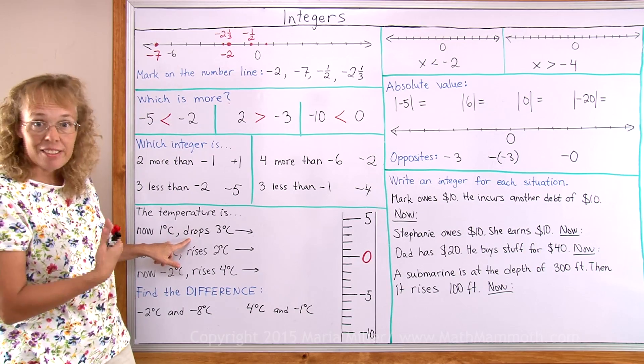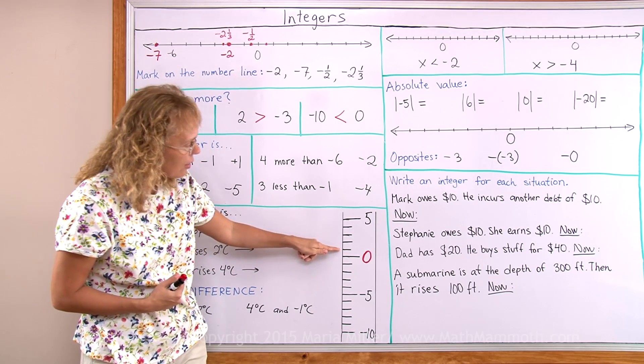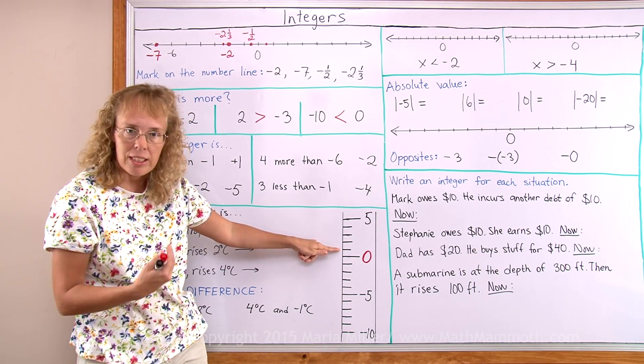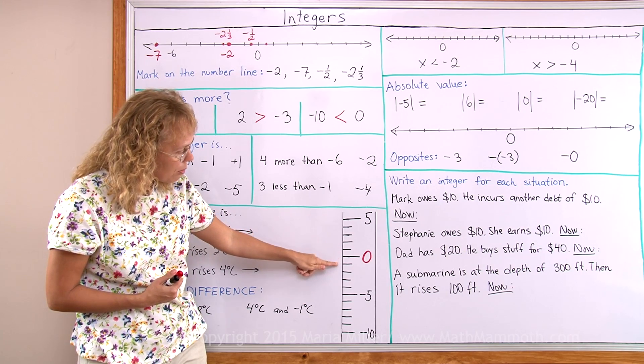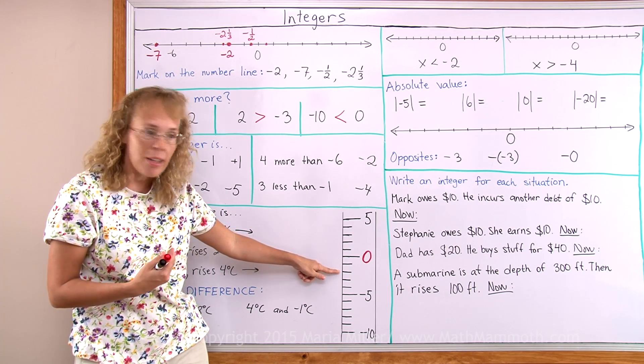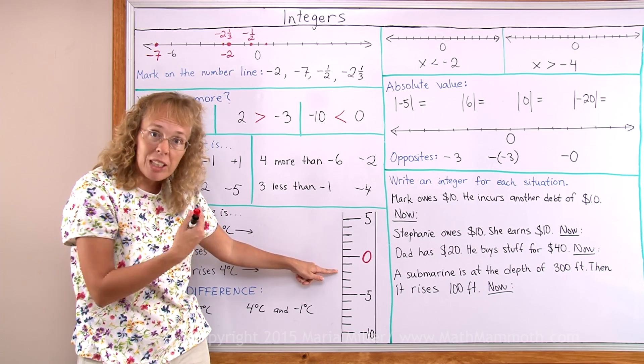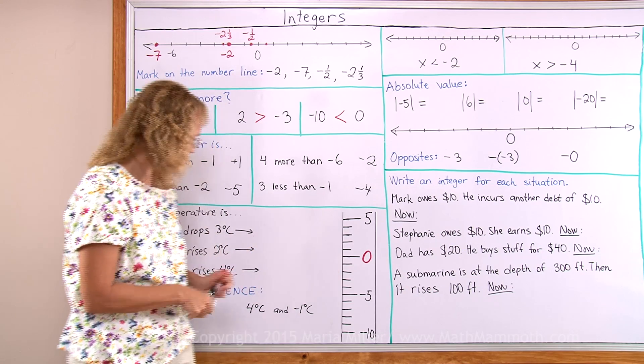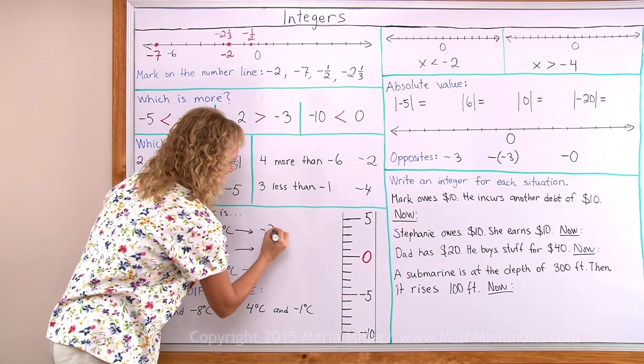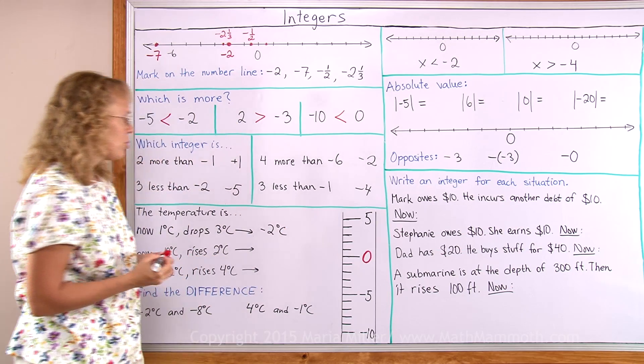And then it drops 3 degrees. If it is here at 1 and it drops 3 degrees, it goes down 3 degrees. And what is this here? That is 2 degrees below 0. That is negative 2. Negative 2 or minus 2 degrees Celsius.